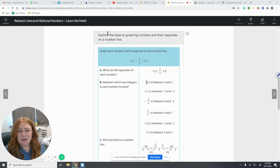We're going to skip down and look at the steps here. We're going to graph numbers and their opposites on a number line. First we want to think about their opposites. If it's positive, we turn it negative. If it's negative, we turn it positive.